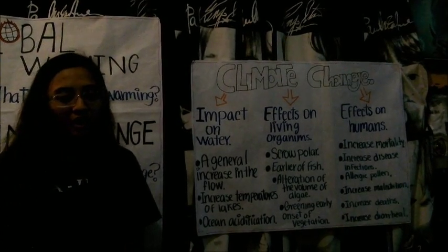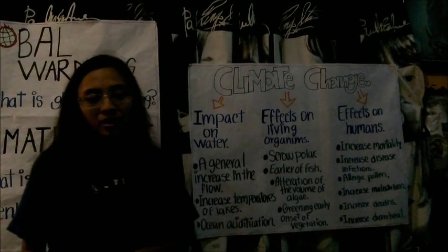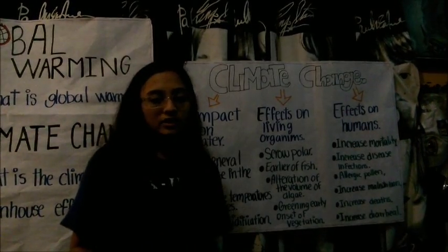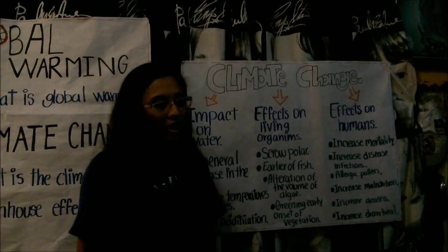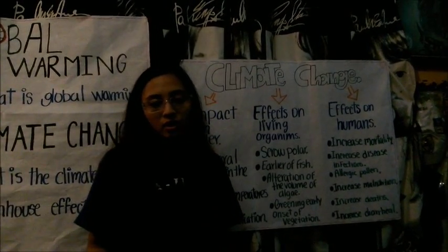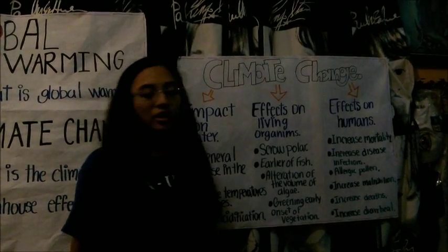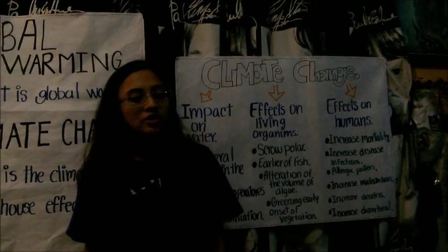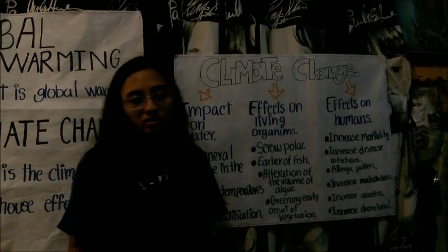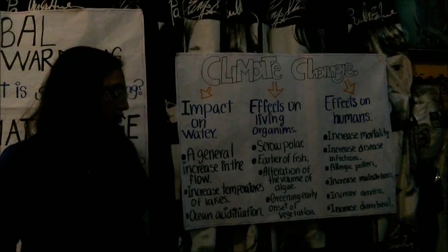Regarding effects on living organisms: advanced start of spring events, such as the process of flowering, bird migration, and similar events in polar regions affecting certain species of animals. Greening and early onset of vegetation as a result of rising temperatures. Next, alteration of the volume of algae, because plankton and fish are affected in high-latitude oceans. Also, changes in fish in rivers and the borders of migration in the grasslands.